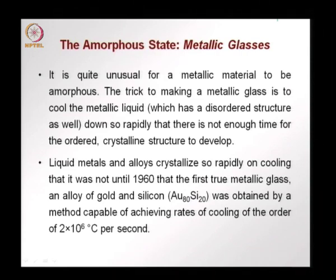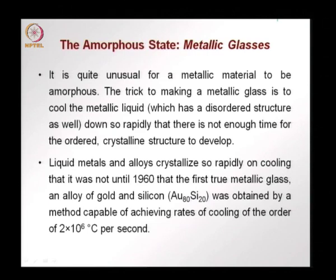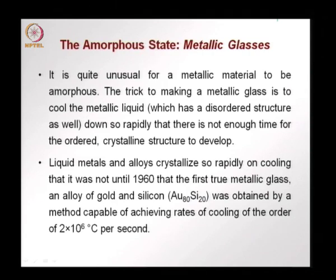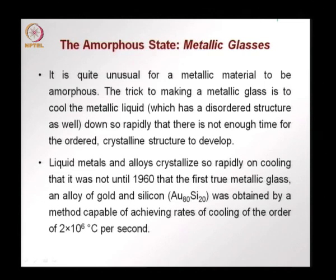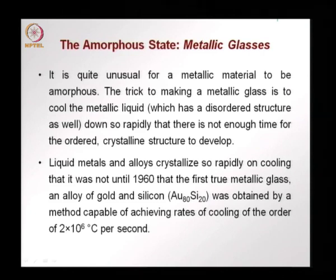It is not easy to make a metal into a glass. The technique is to cool the melt or the metallic liquid very fast so that the disordered structure is maintained and there is not enough time for nucleation and an orderly crystalline structure to develop. It was not until the 1960s that a true metallic glass was formed — as an alloy of gold and silicon.